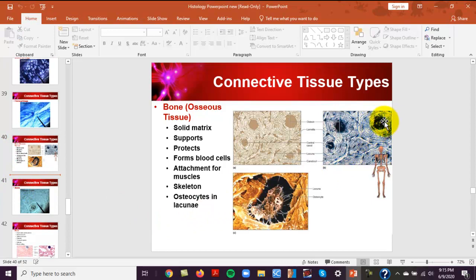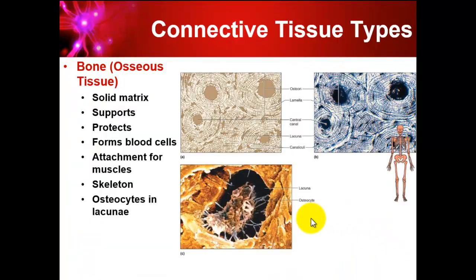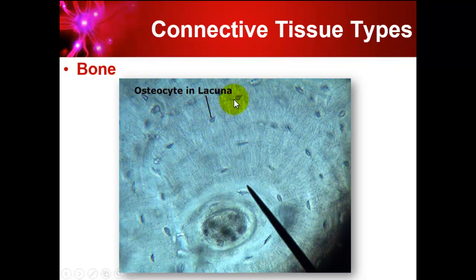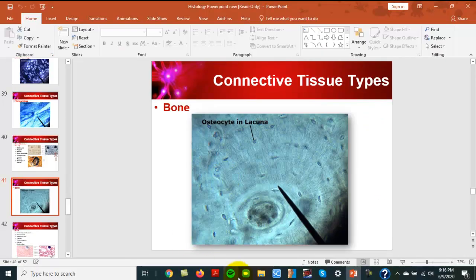Compact bone is formed in circles called osteons. In the lab picture, one complete osteon is visible with a central canal in the middle. Osteocytes (bone cells) are found in small depressions called lacunae within the rings of the osteon.